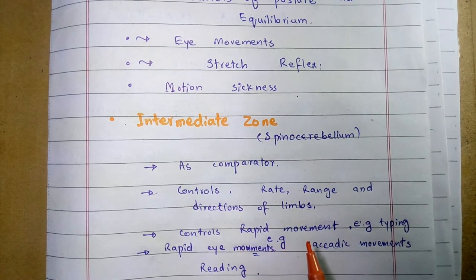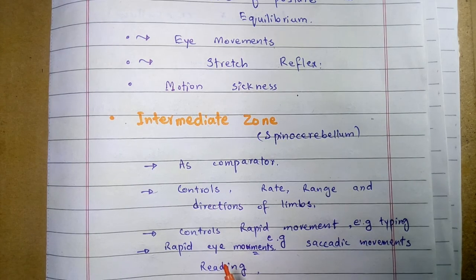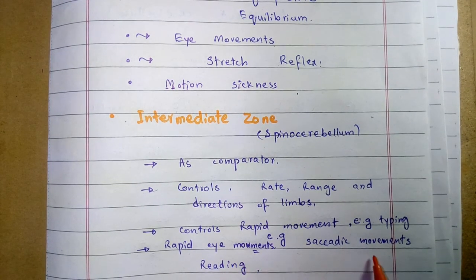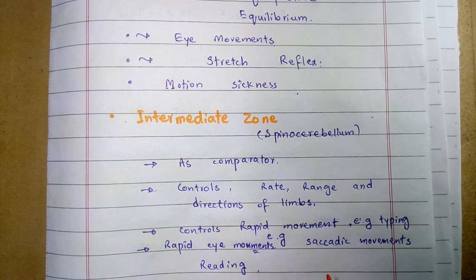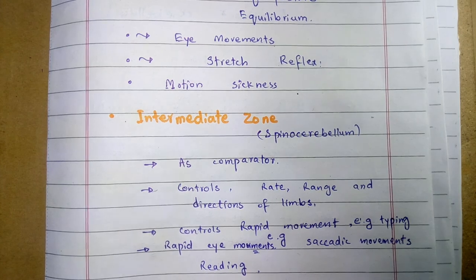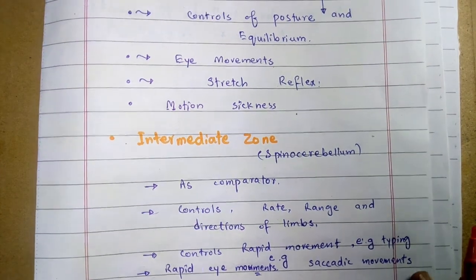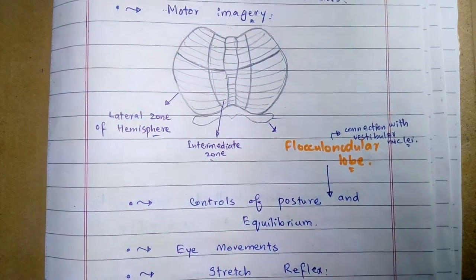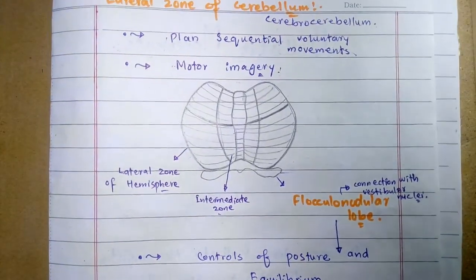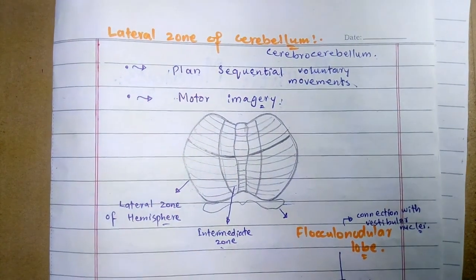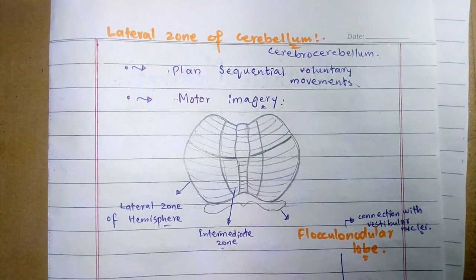The intermediate zone controls very rapid movements, for example typing. It also controls eye movements such as saccadic movements — where the eye jumps from one position to the next, such as during reading or when a person in a moving vehicle looks at outside scenery. These are the three functional zones of the cerebellum and their primary functions. Thank you very much.